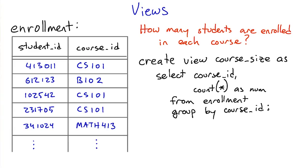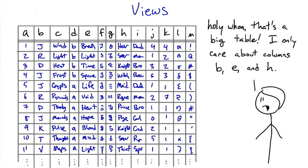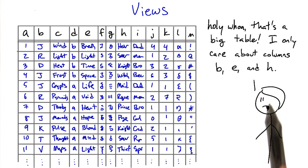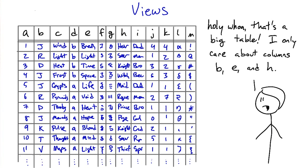Using a view instead of making a subquery is kind of like using a function call instead of copying code. Another use of views is to display only particular columns from a table that has a lot of columns. If you have a table with 20 columns and you have a lot of queries that only refer to four of them, making a view can make your code a lot more clear.